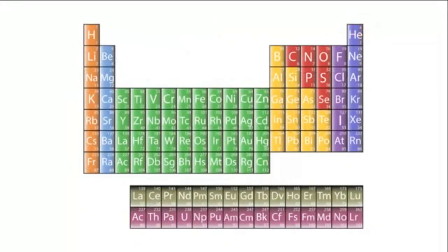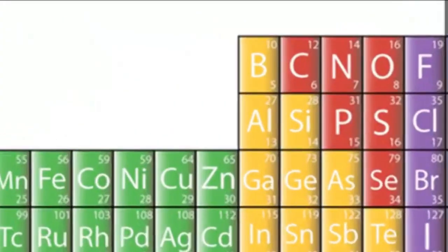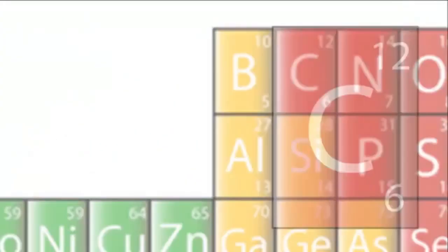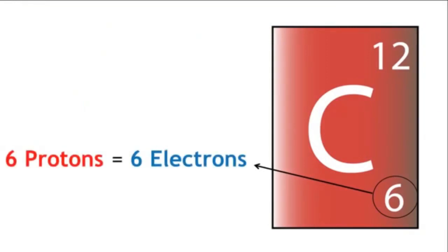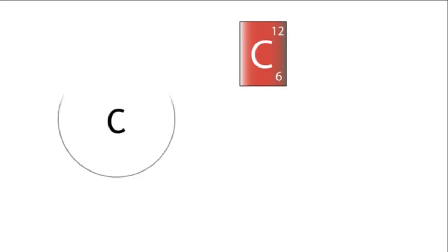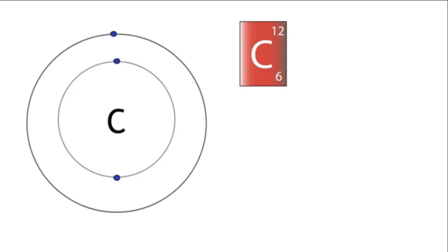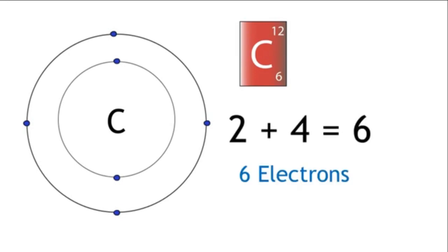Let's look at some more examples. Carbon has six protons. Therefore, it has six electrons. The first two electrons are placed in the first shell. Two plus four — six electrons. This would be written as C, 2, 4.